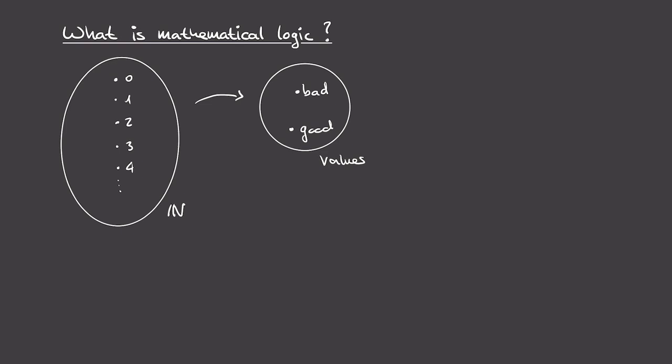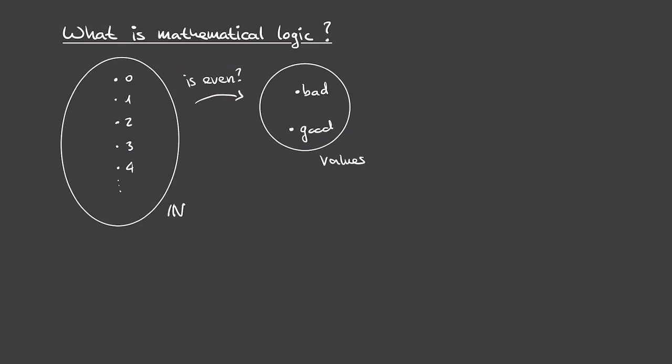For the sake of concreteness, our assessment of a number will depend on its parity. We're going to ask whether a given number is even or not. If it's even, it's a good number; if it's not, it's a bad number. So we have this set of numbers, our set of values, and a function which assigns to each number its corresponding value.